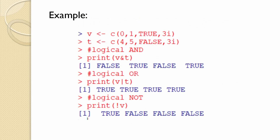Let's see an example. Vector V has values 0, 1, TRUE, and 3i (a complex number). Vector T has values 4, 5, FALSE, and 3i. Applying logical AND with print V & T: the output is true only if both conditions are true. The first element of V is 0 (less than 1, so false) and T's first element is 4 (greater than 1, so true) — AND of false and true is false. The second elements of both are true, so AND gives true. The third values are true and false, so AND gives false. The fourth (3i) in both is greater than 1, so AND gives true.